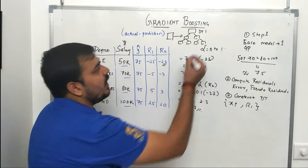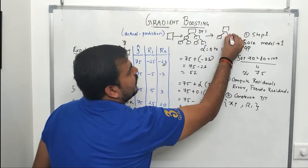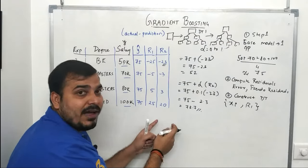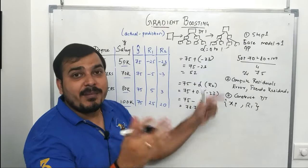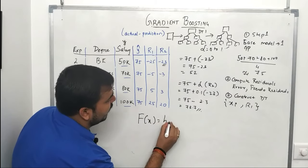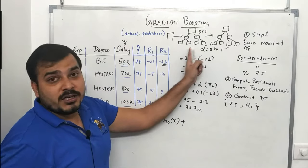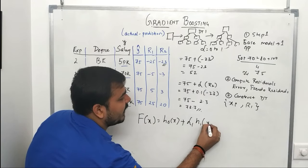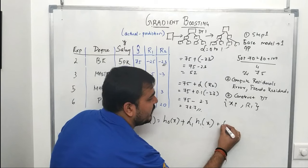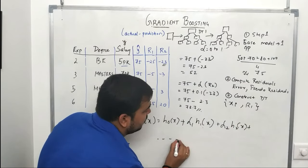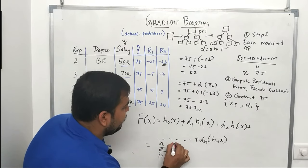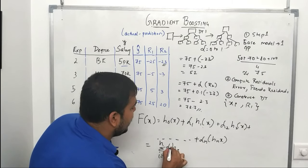We add another decision tree trained on r2 residuals with the same independent features, computing r3, and so on. The generic formula is: f(x) = h0(x) + alpha1·h1(x) + alpha2·h2(x) + ... + alphaN·hN(x), which can be written as h0(x) plus the summation from i=1 to N of alphai·hi(x).